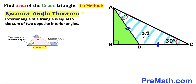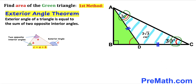Now let's recall the exterior angle theorem. According to this theorem, the exterior angle of a triangle equals the sum of the two opposite interior angles. In our case, angle ADB is our exterior angle, and it equals the sum of the two opposite interior angles: 30 degrees plus 30 degrees, which gives us 60 degrees. So angle ADB turns out to be 60 degrees.